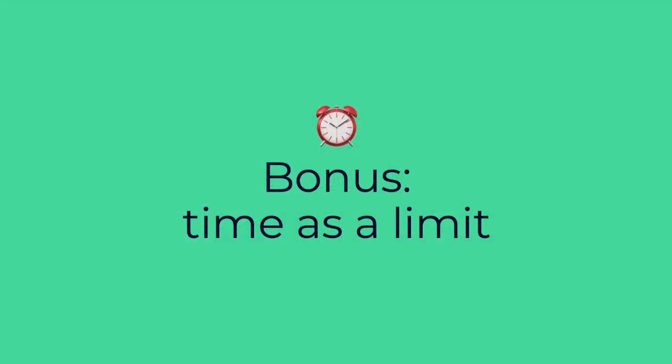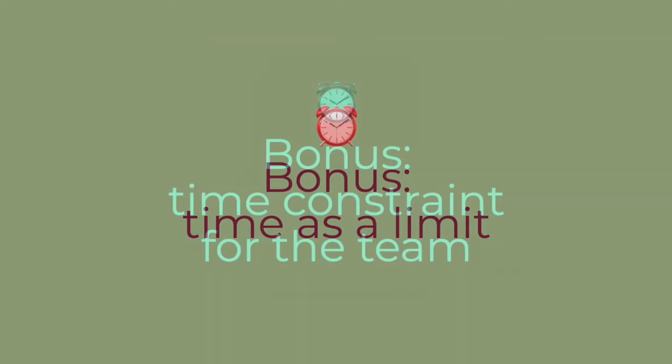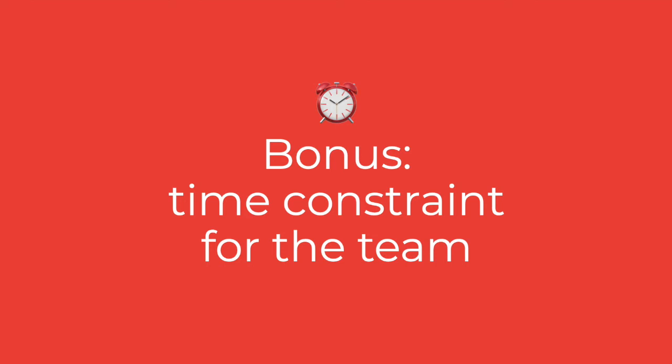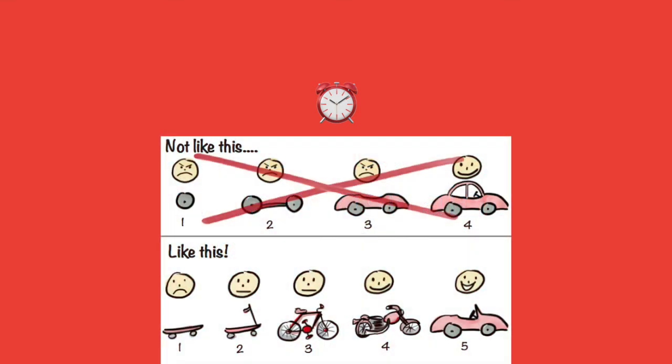Bonus! Right now we used the time constraint to constrain the time of day. You could also constrain the time they have to complete the goal — for instance, one minute, 15 minutes, or half an hour. Another way to use time is to constrain the team's time: have them imagine what can we build in 15 minutes, what can we build in two hours, and what can we build in two days? This will put them in a different mindset. And remember the skateboard-to-Ferrari analogy — that might help you as well.